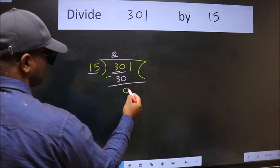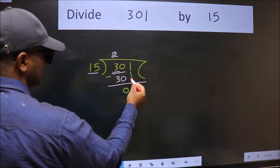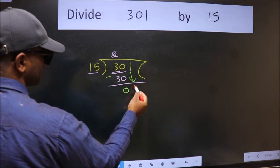Now we should subtract. We get 0. After this, bring down the beside number. So 1 down.